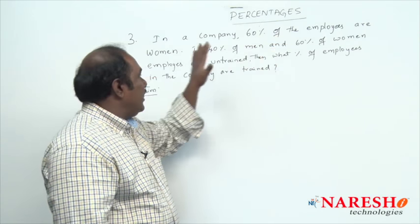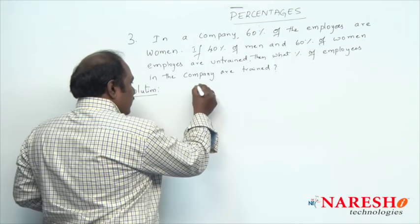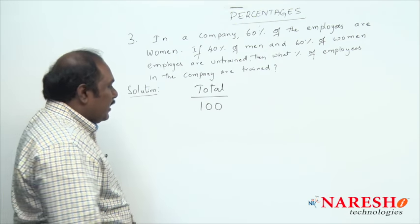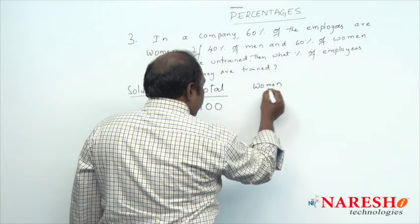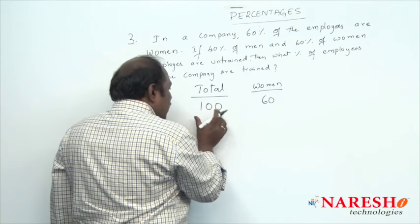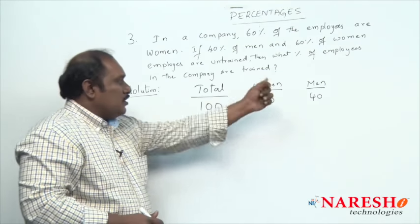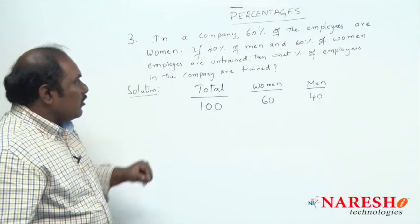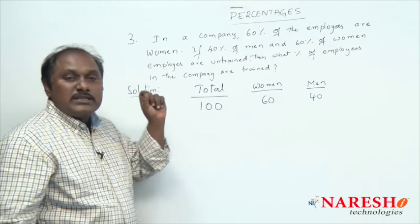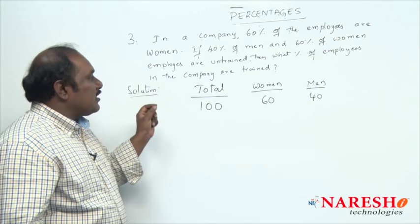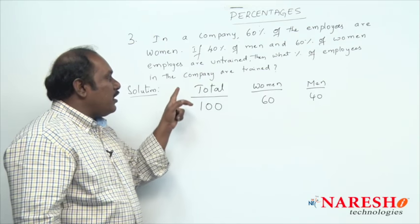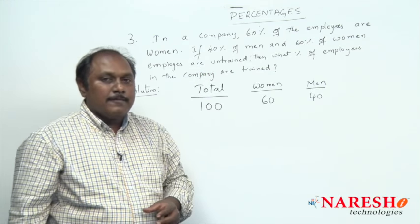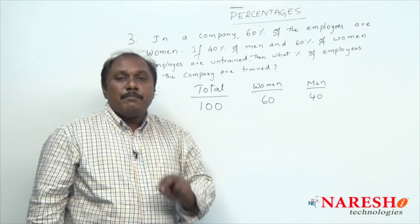In a company, 60 percent of employees are women. Assume the total number of employees in the company is 100. Then women employees should be 60. Out of 100, if women are 60, men should be 40. So we have men = 40, women = 60, total = 100. If 40 percent of men are untrained, then 60 percent of men are trained. What is 60 percent of 40? 10 percent of 40 is 4, so 60 percent is 6 × 4 = 24. Out of 40 men, 24 are trained.